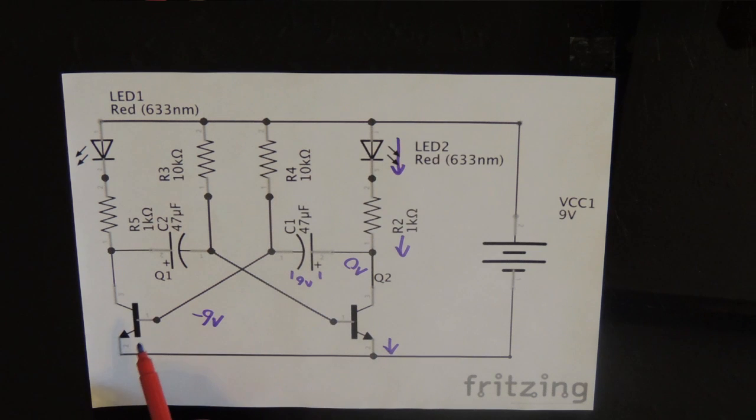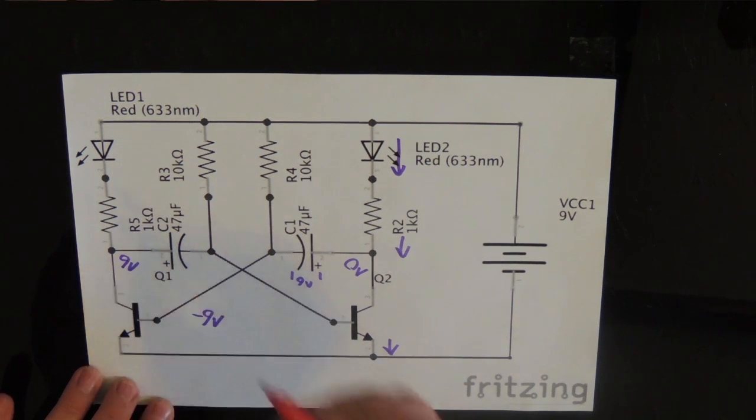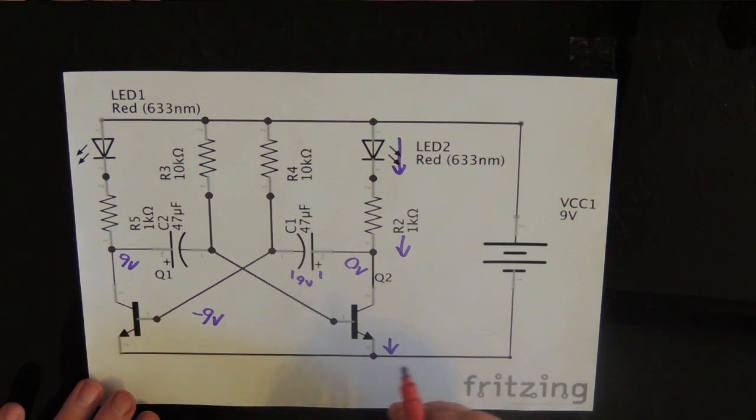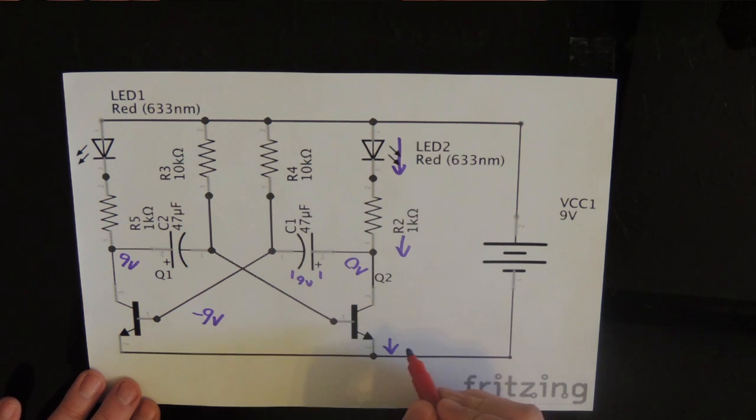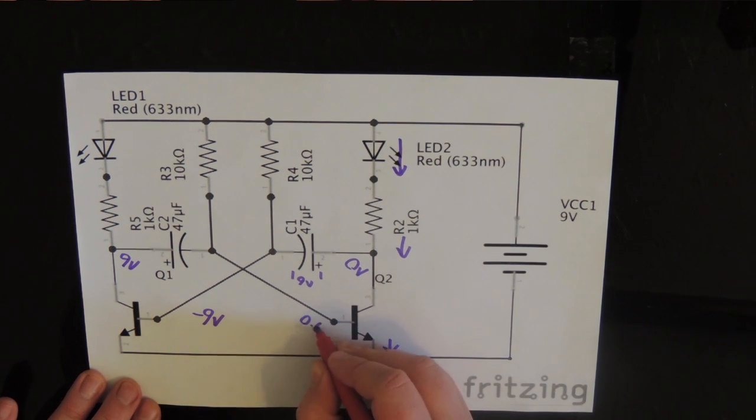So with minus 9V at the base of the Q1 transistor, Q1 is now turned hard off. It means that the voltage at the collector of Q1 is now 9V with respect to ground, and the voltage at the negative terminal of the capacitor is now 0.6V.